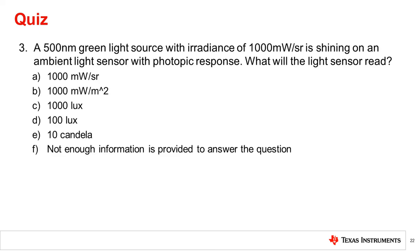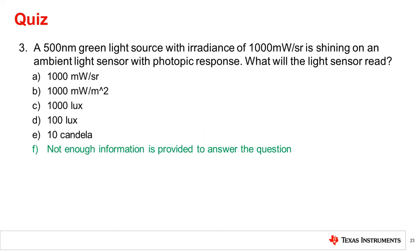Question 3: A 500 nanometer green light source with a radiance of 1000 milliwatts per steradian is shining on an ambient light sensor with photopic response. What will the light sensor read? The correct answer is: not enough information is provided. We discussed how placing a photodiode at different distances from a light source will affect the reading, so distance from the source is needed.